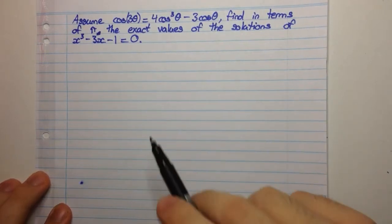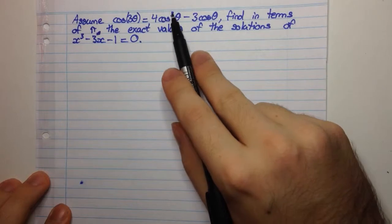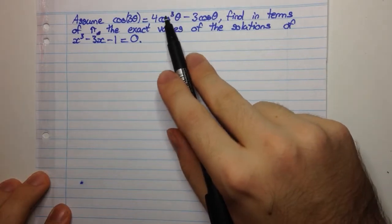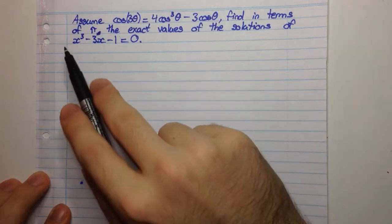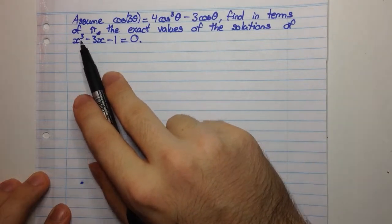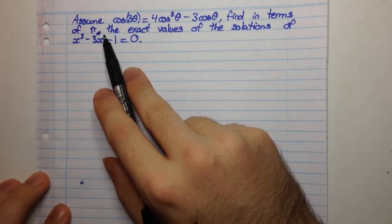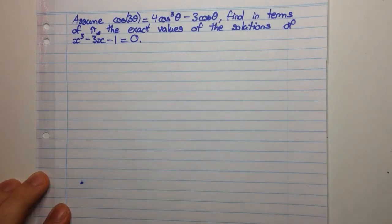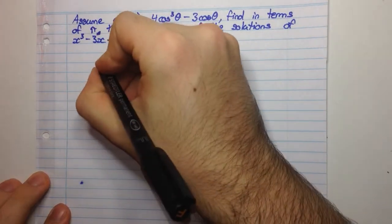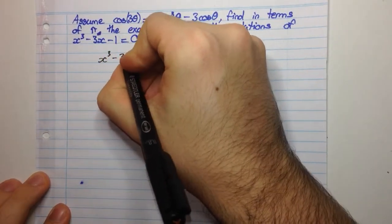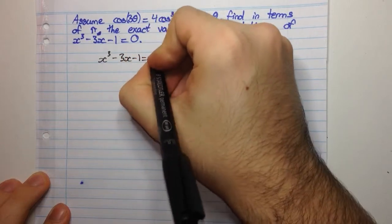Another thing that you can notice is that here we have cos³ and here we have cos¹. Now here we have x³ and here we have x¹. So this might suggest that there's some sort of relationship going on here. Okay, so this is what we're trying to solve, so let's write it down.